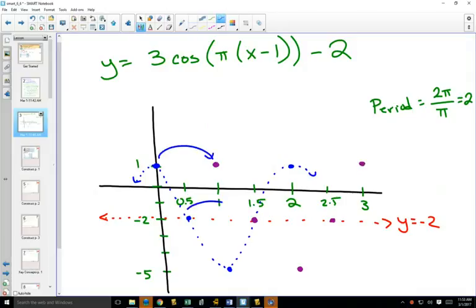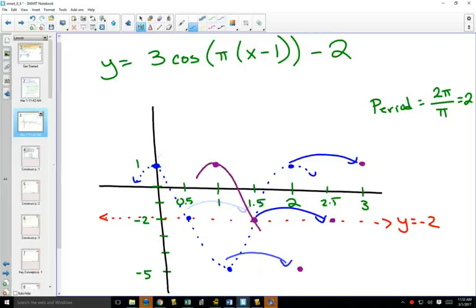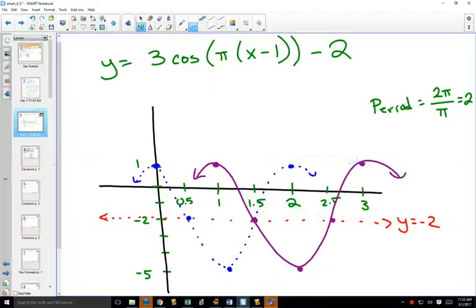So again, can you see that each of these has gone 1 to the right? And we can now draw our graph with a solid line. There's our final graph, putting all of those things together.